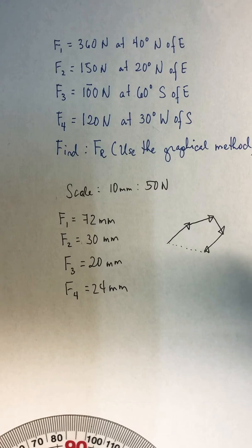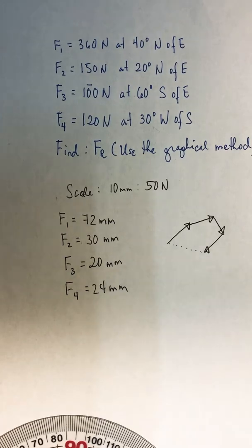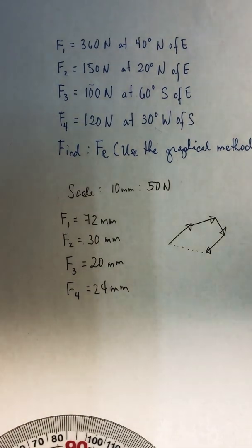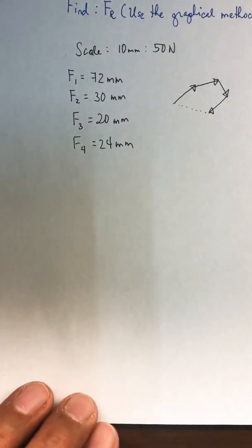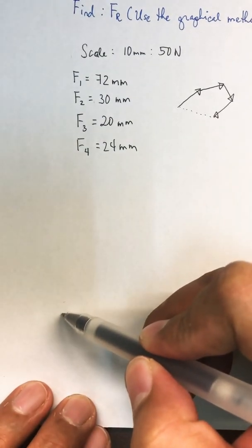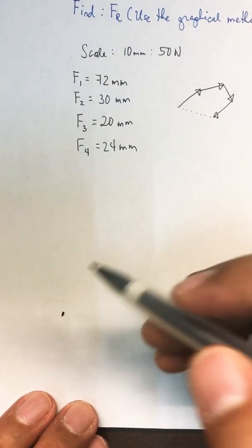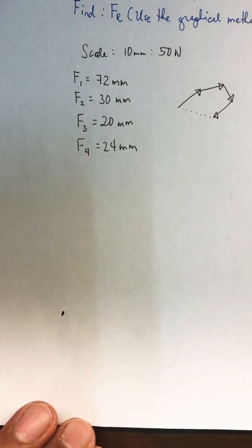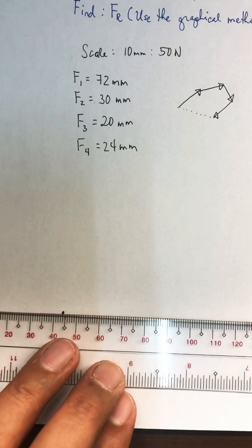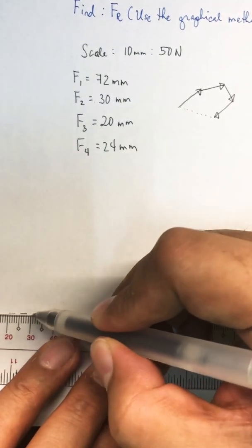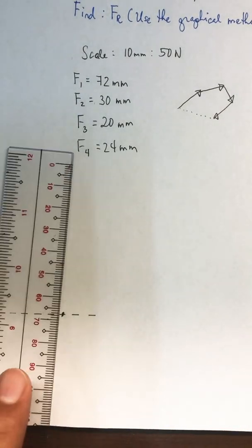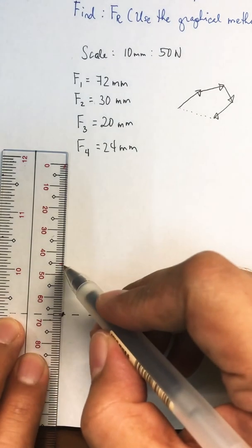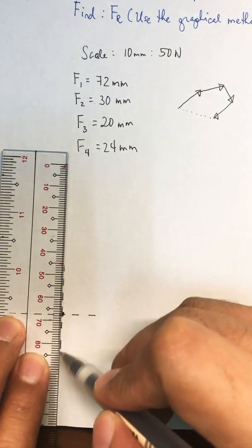After estimating where your vectors will finish, we move on to step three, which is to draw the vectors head to tail. We choose an appropriate spot to start — let's choose this point as our starting point for F1. We draw an imaginary Cartesian plane which will serve as our guide in drawing the first vector.